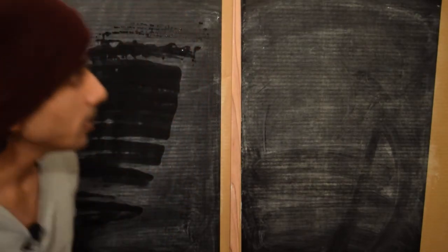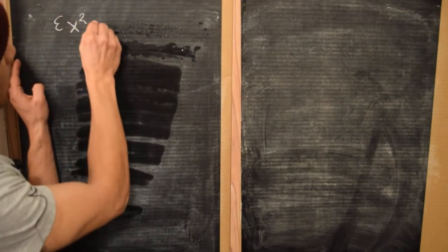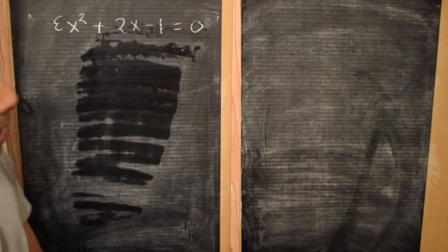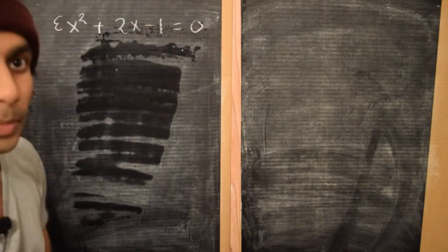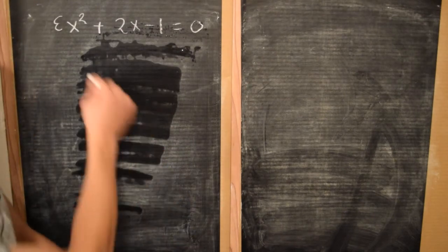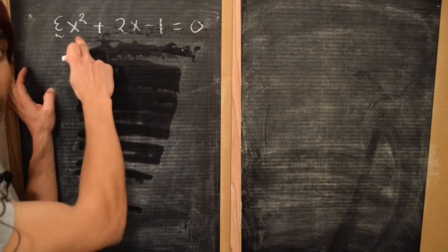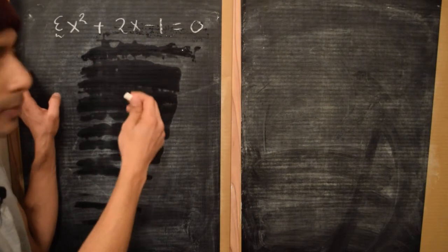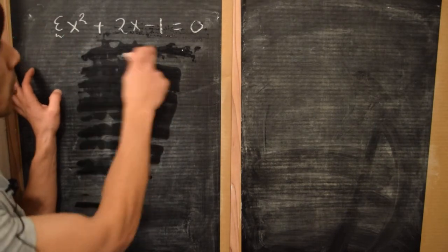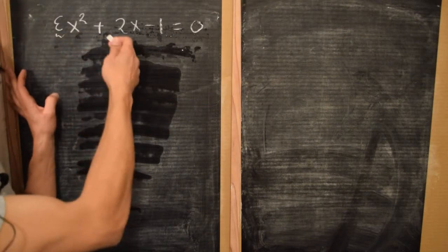Let's look at an equation of this form: epsilon x squared plus 2x minus 1 equals 0. Note the important distinction between this problem and the class of problems we were studying before: the small parameter epsilon is actually multiplying the term x squared, which in this case happens to be the term of the highest order in the equation. So epsilon is multiplying this highest-order term.